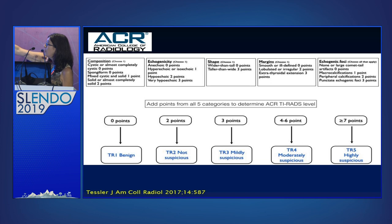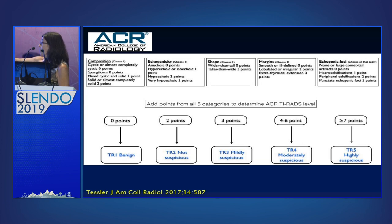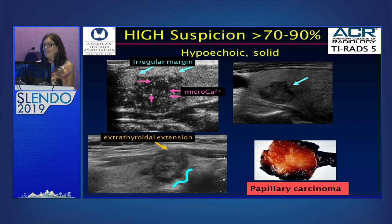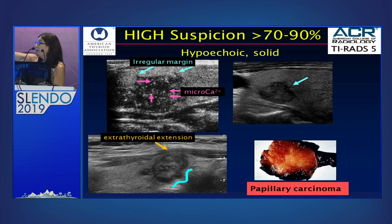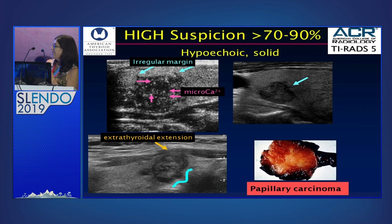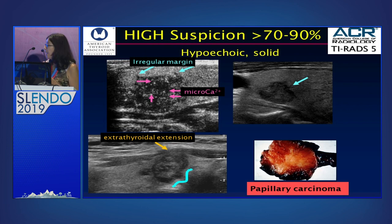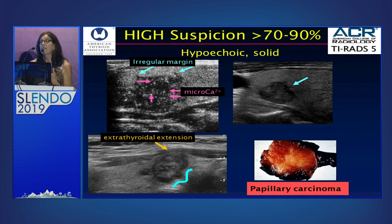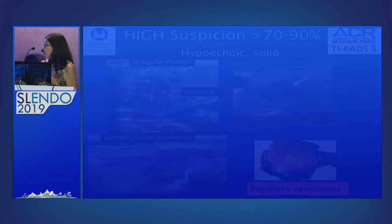On the top of the TI-RADS worksheet, you can see composition, echogenicity, shape, margins, and echogenic foci. You can see the number of points awarded to each feature within that particular category. You add them up and you get the TI-RADS score. Let's start with the highest suspicion nodule. These are hypoechoic nodules — darker than the surrounding thyroid — they're solid, they have irregular margins, you can see the bright spots that are microcalcifications, and this nodule even has extrathyroidal extension. This is TI-RADS 5 — ATA high suspicion. These nodules have a very high likelihood of being cancer, and these are generally infiltrative papillary carcinomas.